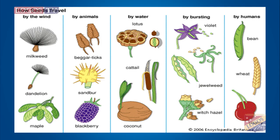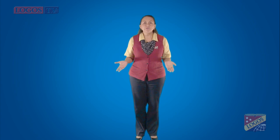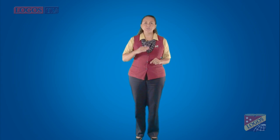Another way of distribution is dispersal. That occurs when an organism moves from one place to another. Dispersal can be caused by wind, water, or living things, including humans. Many animals move on their own, but plants and small organisms need help to move from place to place.